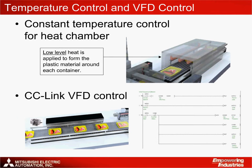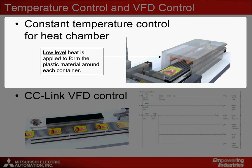In the application, a constant temperature control heat chamber is used to form plastic material around each tray or container. This probably wouldn't be used for sealing plastic around poultry products as shown in the graphic; a vacuum assembly could replace the heat chamber in that case. Regardless, the heat chamber would need to produce very low levels of heat to prevent the styrofoam material from melting. Mitsubishi's temperature controller is very useful here to maintain a set temperature very accurately.